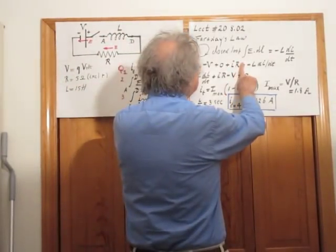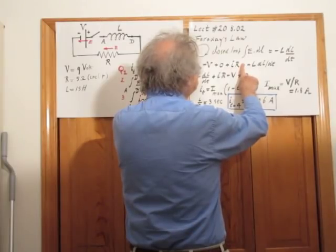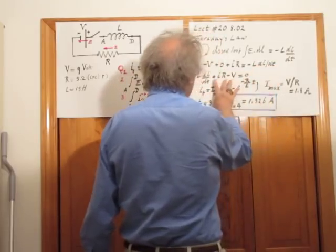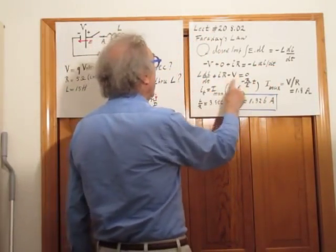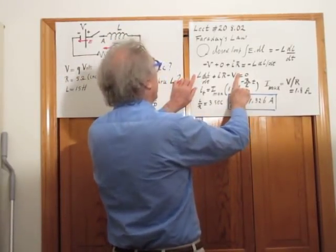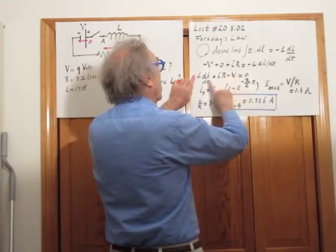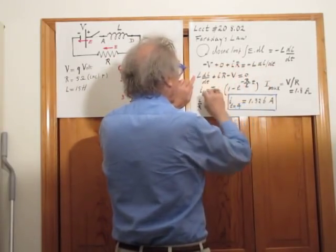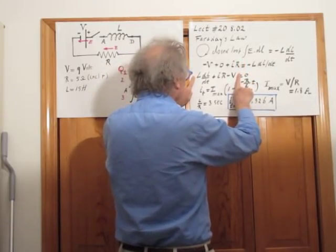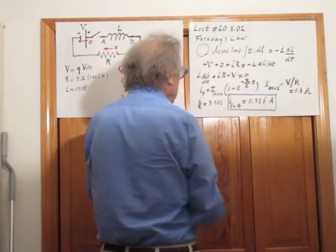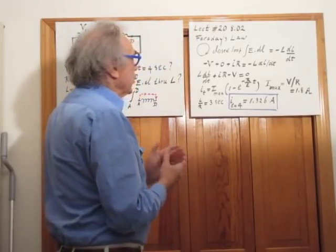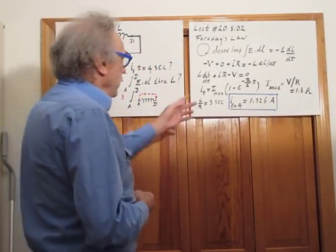This is the closed loop integral of E dot dl — it is not zero. I can bring this term over and write this in a simpler way. That rearranged form is not the closed loop integral of E dot dl, but it equals zero because I've moved the term. This is the differential equation whose solution I derived in lecture number 20.